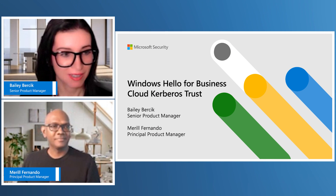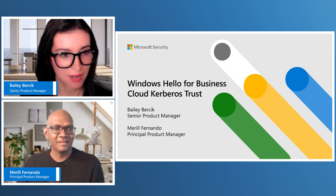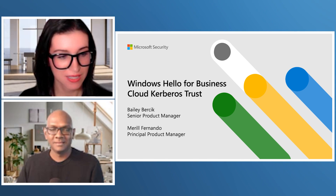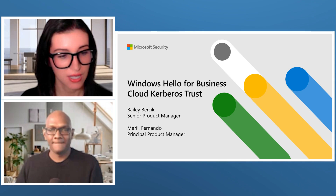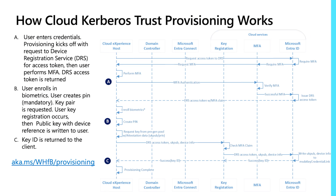Hey y'all. My name is Bailey Bersick, and I'm here with my colleague Meryl Fernando. Today we're going to talk about Windows Hello for Business, specifically Cloud Kerberos Trust, which you may hear us refer to as Cloud Trust. We're going to kick things off with explaining how provisioning works, then go into how authentication works and how you would deploy this in your own environment. I highly recommend that you use Cloud Kerberos Trust unless you have a very compelling reason to use a different deployment model.